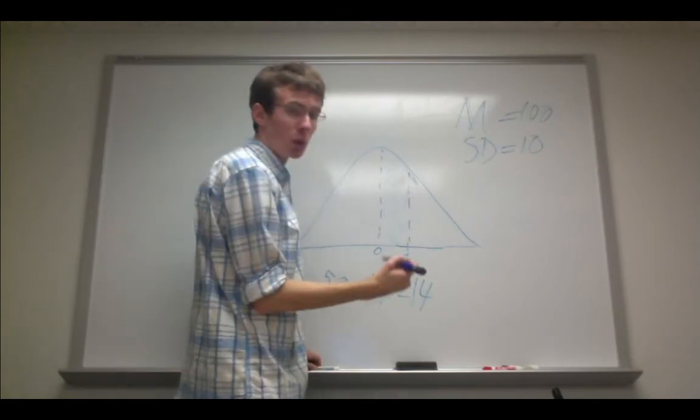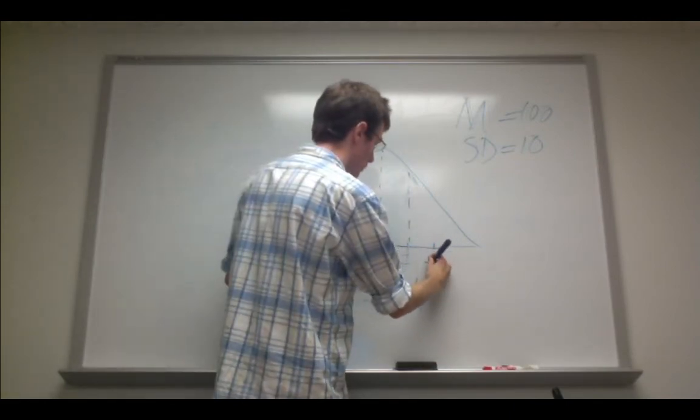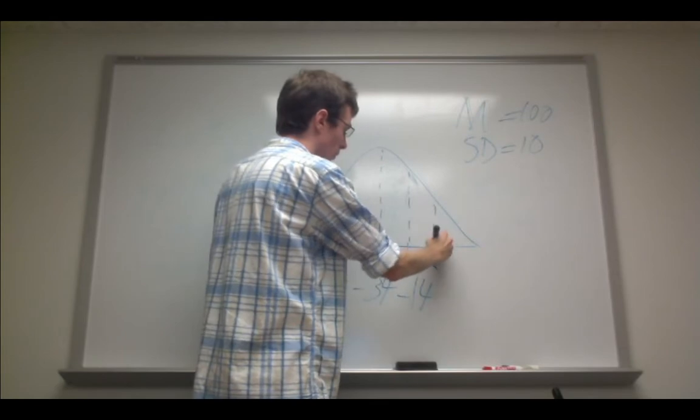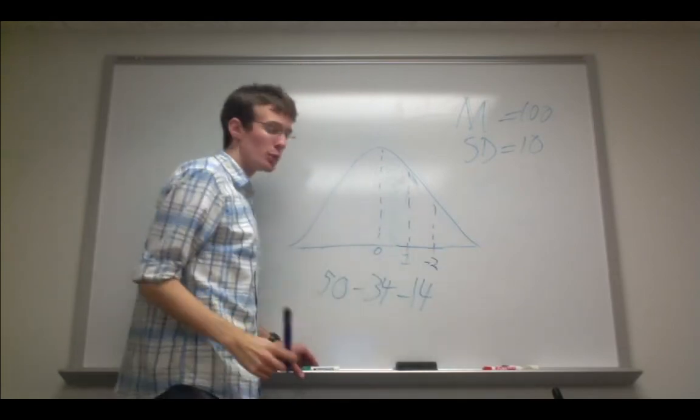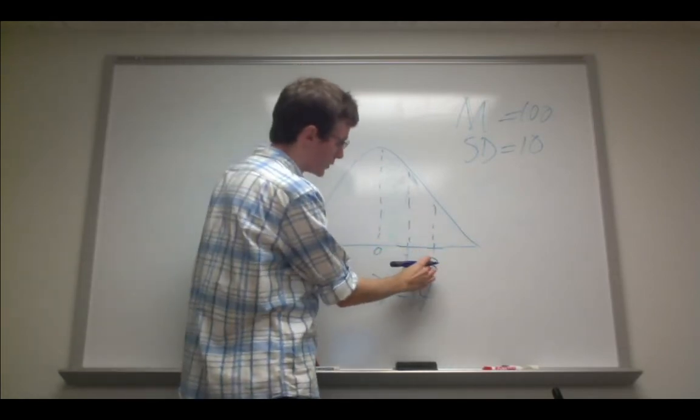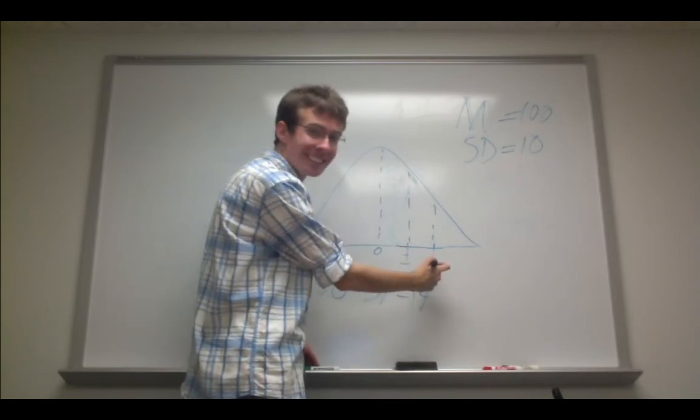And lastly, for a z-score of 2, 14% of the distribution is captured between a z-score of 1 and 2.